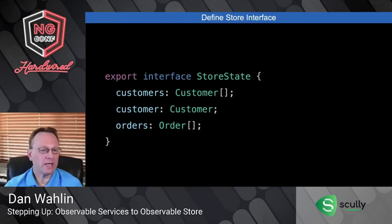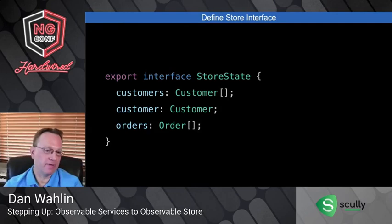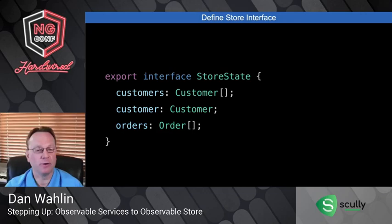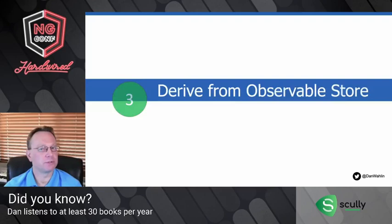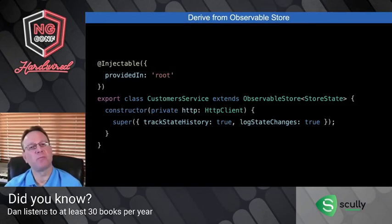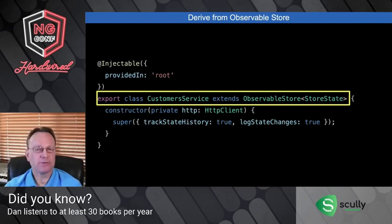We define a StoreState interface — in other words, what's going to go in our store. In this simple example I have customers, a customer, and orders. It could be really small like this or really big; it's totally up to you. Once you've done that, we hook Observable Store up to our Angular services with an extremely simple step: we derive from ObservableStore. Here's an example — CustomerService extends ObservableStore of StoreState. That alone makes your service capable of interacting with the store.